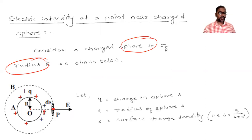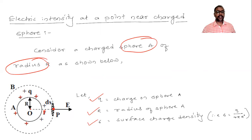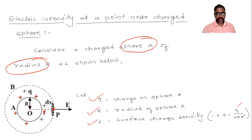Now we define some parameters. Q is the charge on sphere A, capital R is the radius of sphere A. Sigma is defined as surface charge density, or charge per unit area, so sigma equals Q divided by 4πR², which is the surface area.